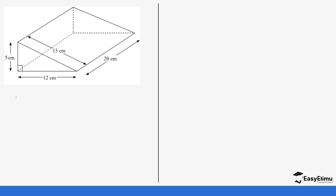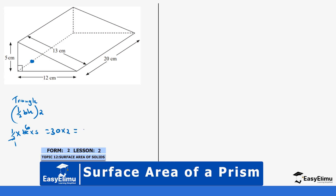We will start with the area of the triangle, which is going to be half base times height. Remember we have two of them so we multiply by two. So this is going to be one half times 12 times 5. That gives us 6 times 5, which is 30. But remember there are two of them, so 30 times 2 gives us 60 cm squared.